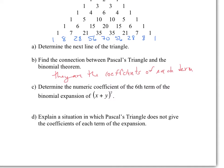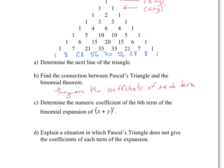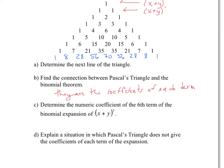Determine the numeric coefficient of the sixth term of the binomial expansion of x plus y to the power of 7. x plus y to the power of 7 corresponds to the row for power 7. Counting to the sixth term: 1, 2, 3, 4, 5, 6 — the coefficient would be 21.